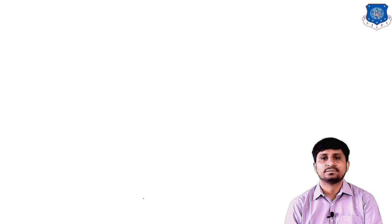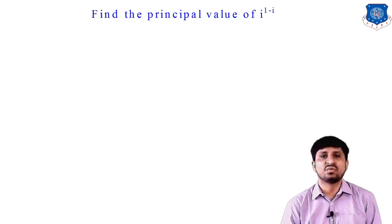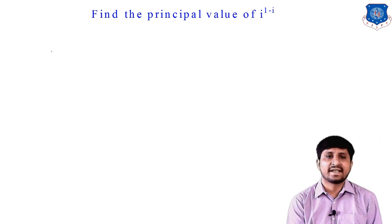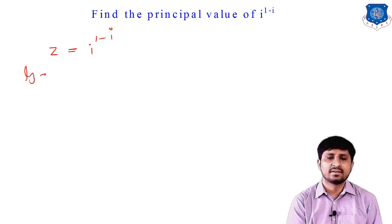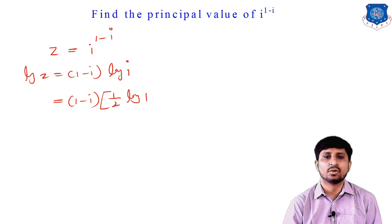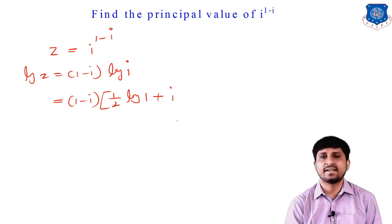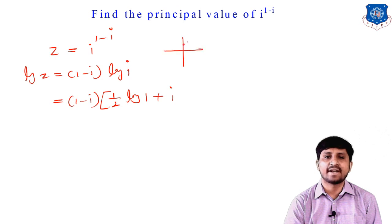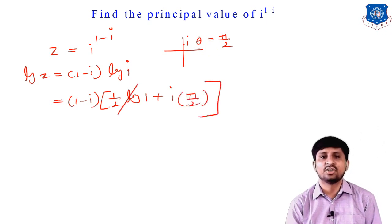Next example: find the principal value of i^(1-i). They specify principal value, so let z = i^(1-i) and take log on both sides. So log z = (1-i)·log i. Now find the principal value for log i: x = 0, y = 1, so x² + y² = 1. Thus (1/2)log 1 + i·θ, where the principal argument of i is π/2.